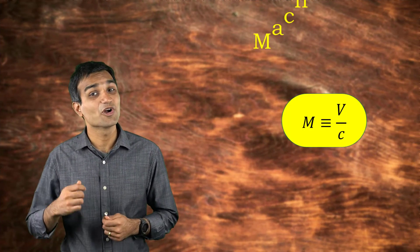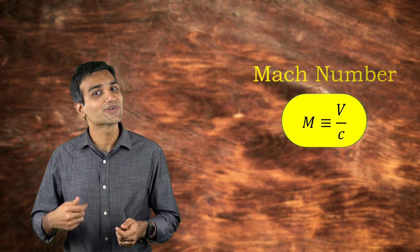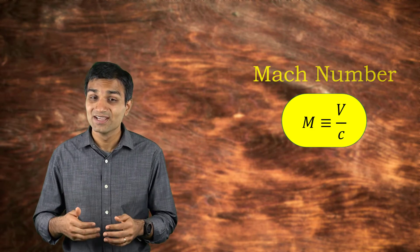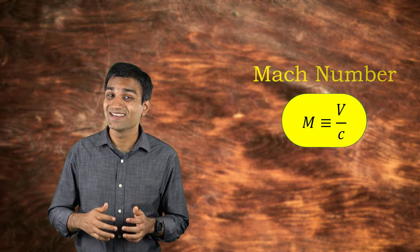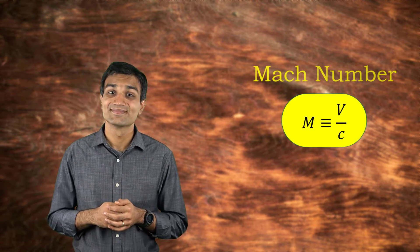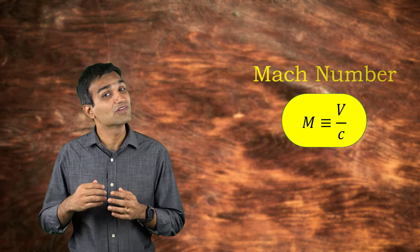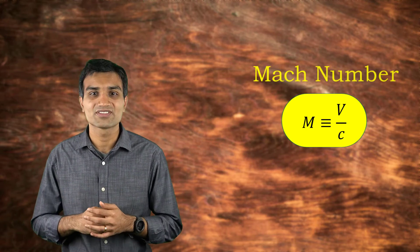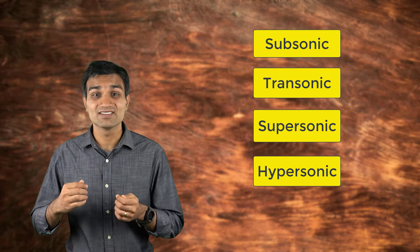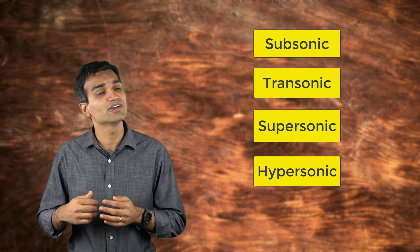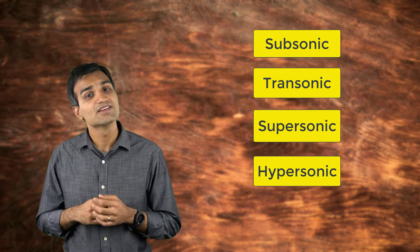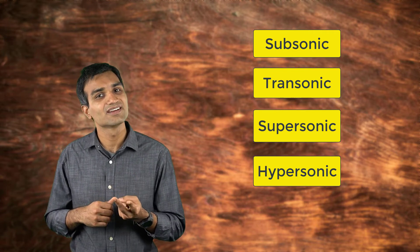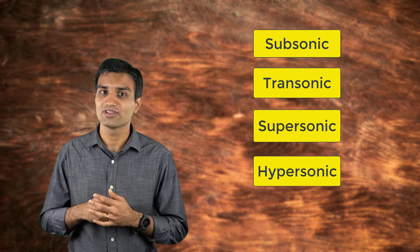A dimensionless number called the Mach number is used to characterize the velocity of the fluid with respect to speed of sound in that medium. It is defined as the ratio of local velocity to the speed of sound. Depending on its value, we categorize the flow field into four different flow regimes: subsonic, transonic, supersonic, and hypersonic.